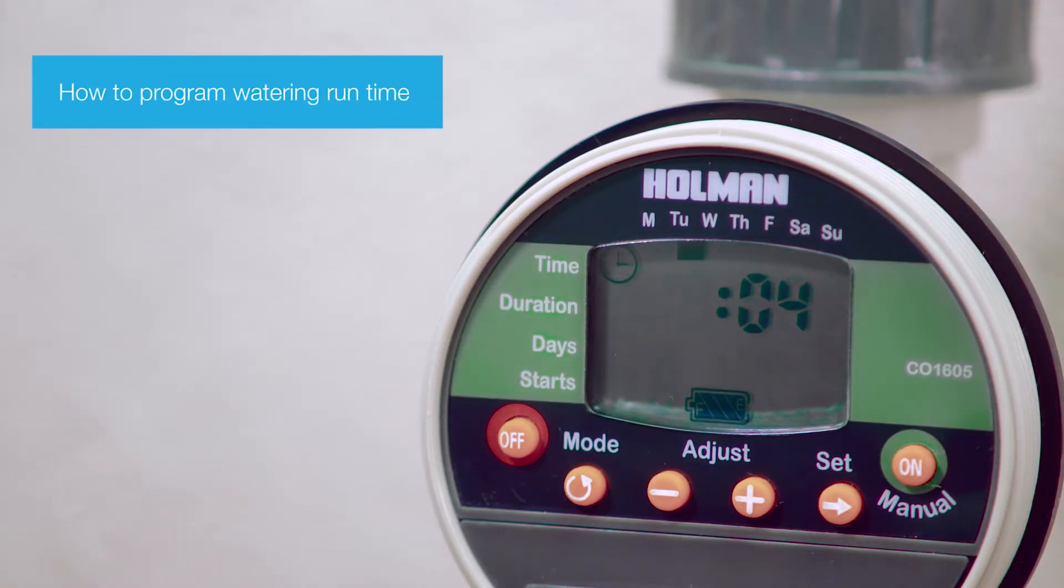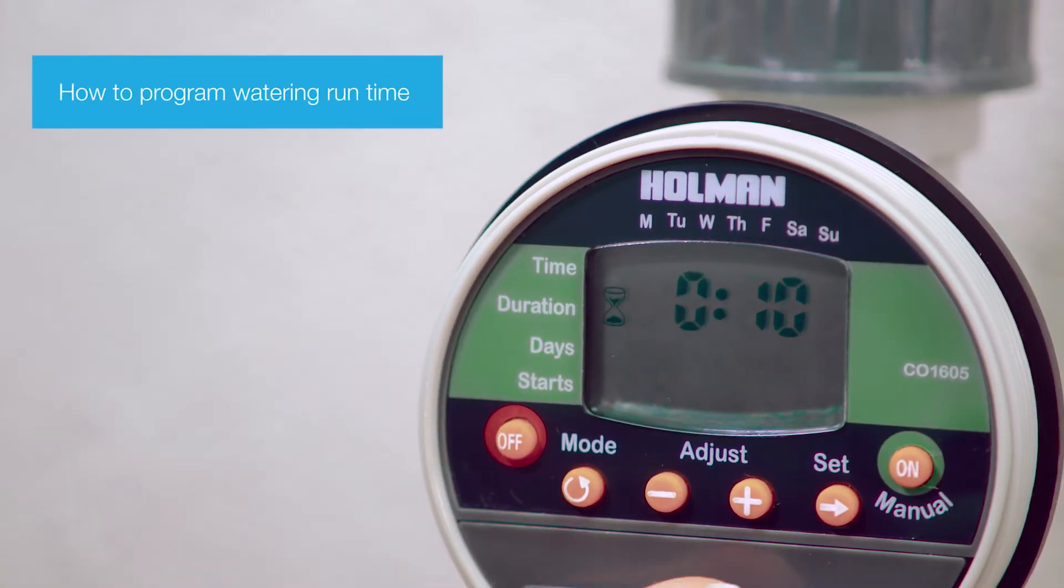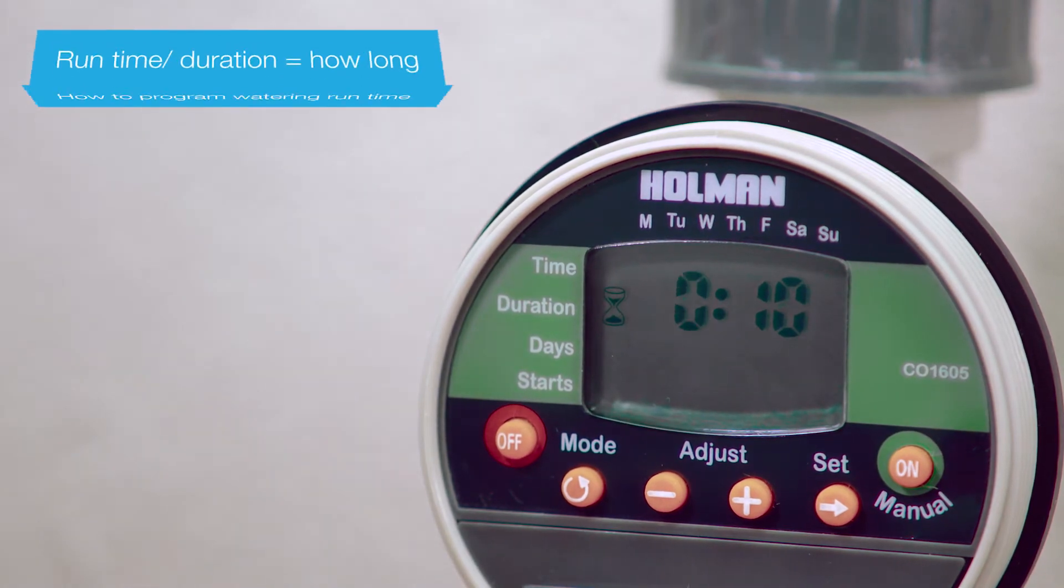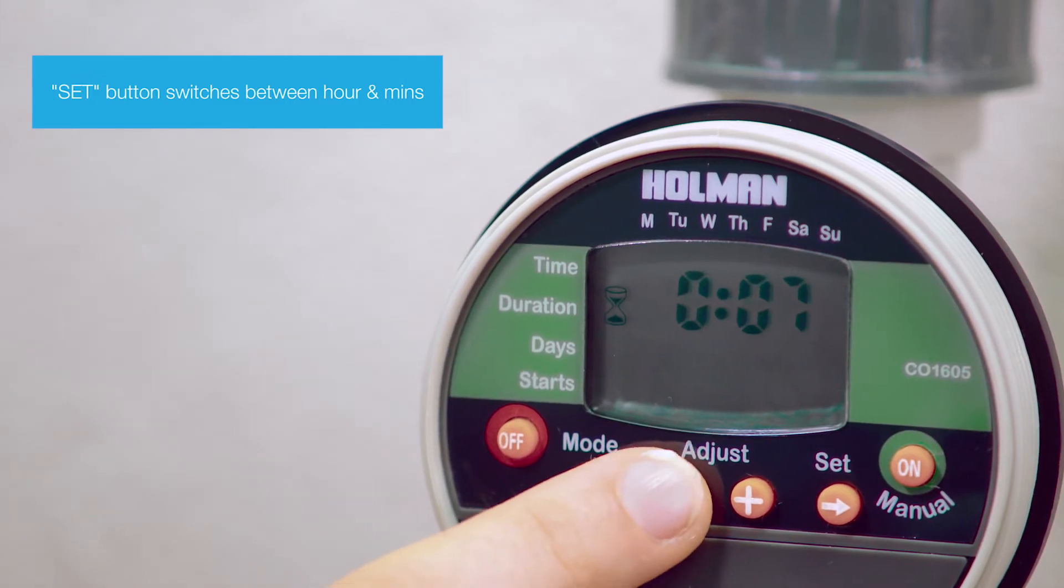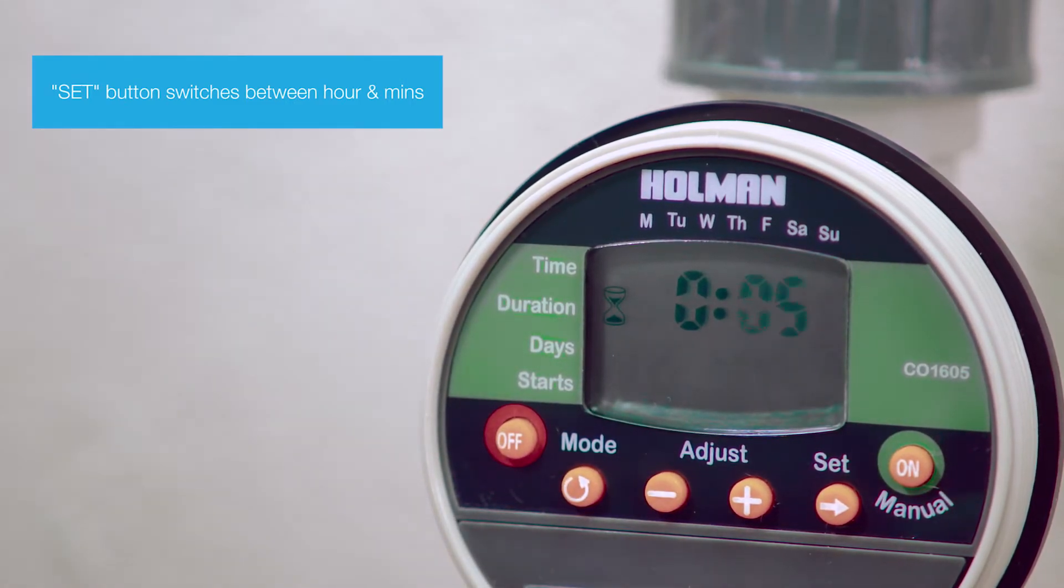To program the watering run times or duration, start by pressing the mode button. The hour will start flashing. Press set to switch to minutes. Use plus and minus to adjust.